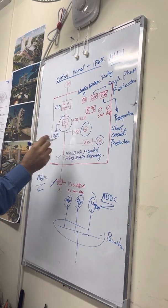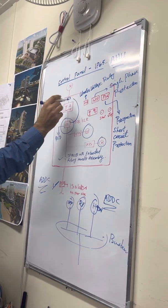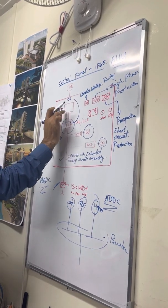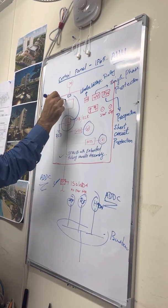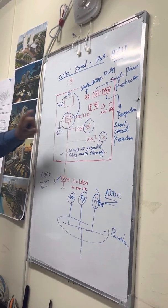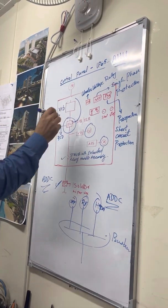And the important is the ELCB. Now this ELCB we cannot put here. It is not allowed to put after, for example if it is VFD. It is not allowed to put any earth leakage protection after the VFD. So it should be here. So this ENCB, it should be here.